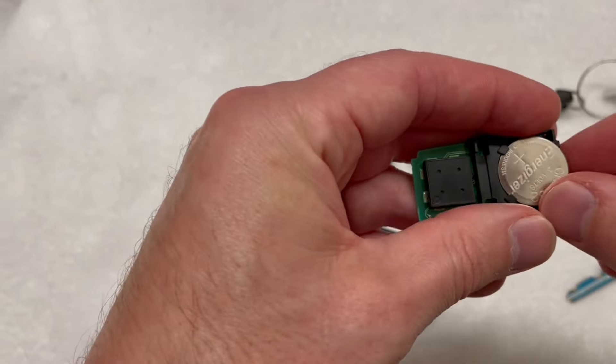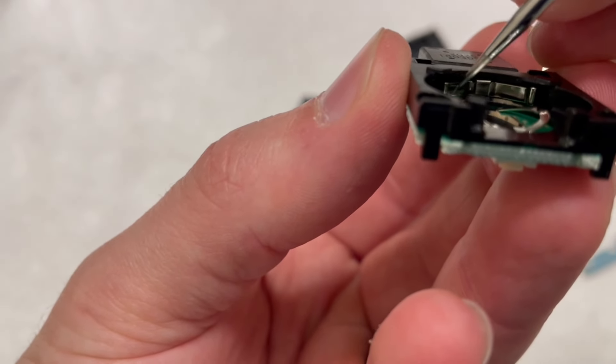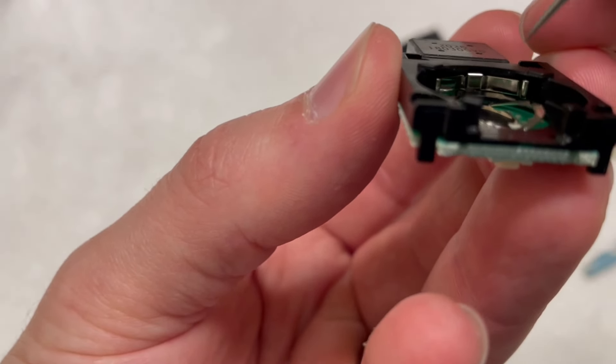The thing that happens sometimes is if you look in here, right in here, there's like a little metal half-circle. The battery is not connecting to that half-circle. You're like, how can it not connect?